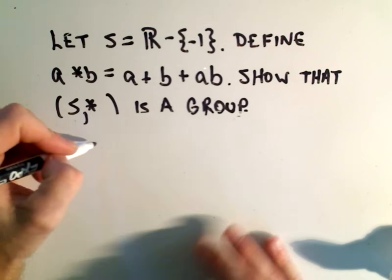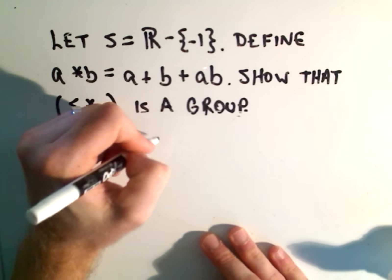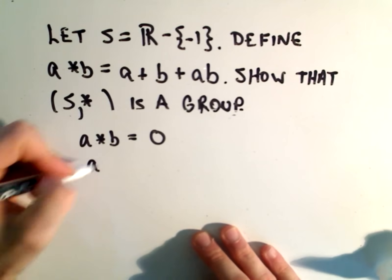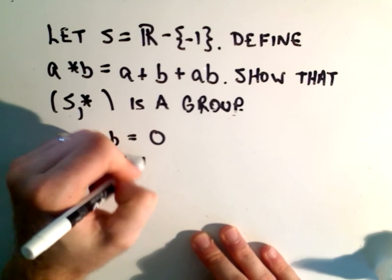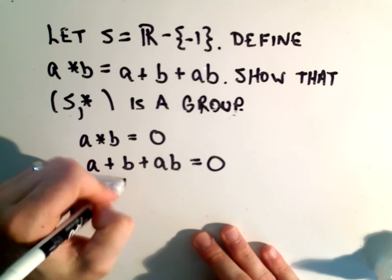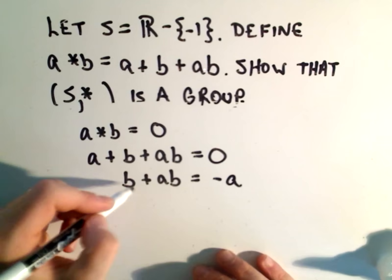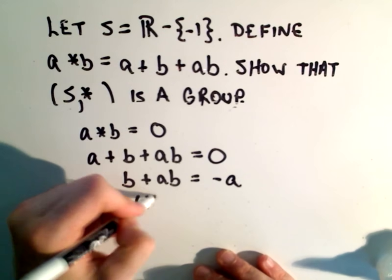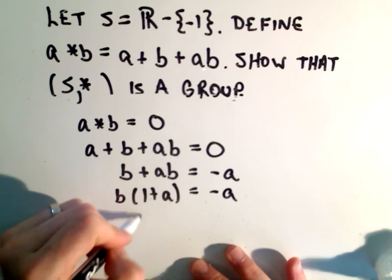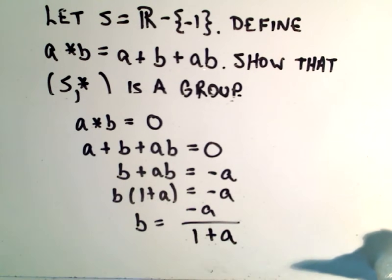The last thing we have to show is that inverses exist. So that means that a star b would have to equal the identity element zero. Well, what would happen? That means a plus b plus ab would have to equal zero. We could do the same thing. We could subtract: b plus ab would equal negative a. Factor b out. We'll get one plus a equals negative a. And then simply divide. We'll get that b equals negative a over one plus a.